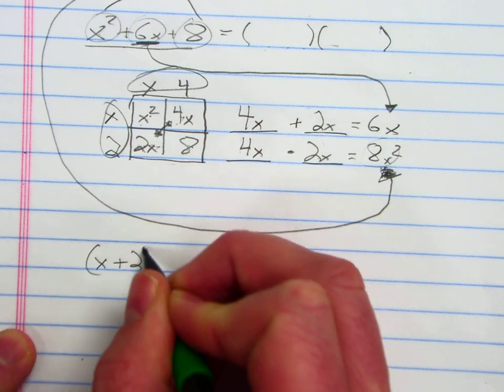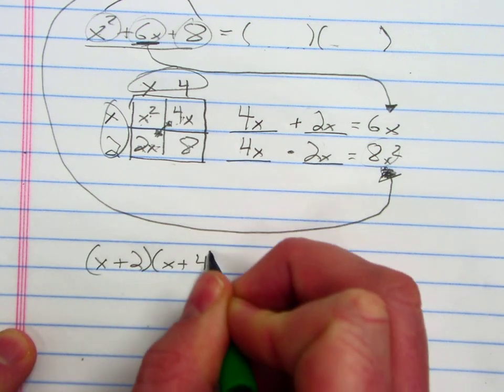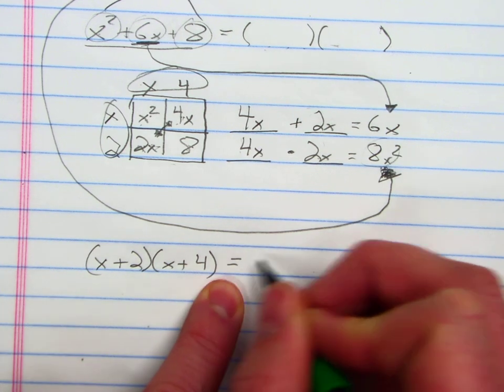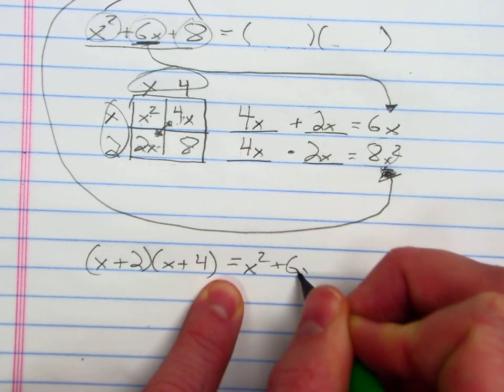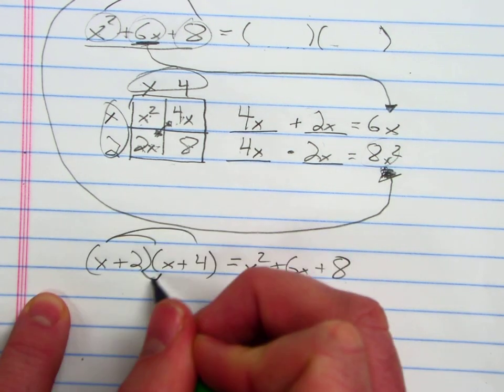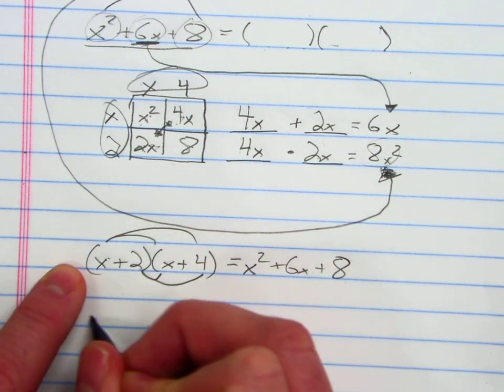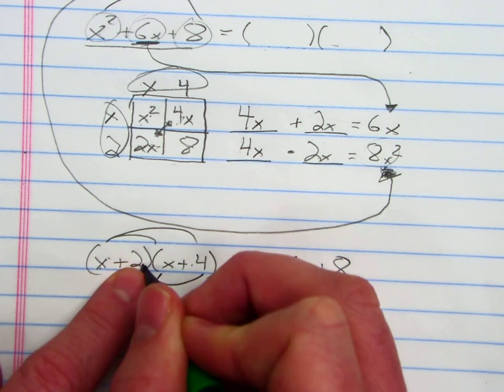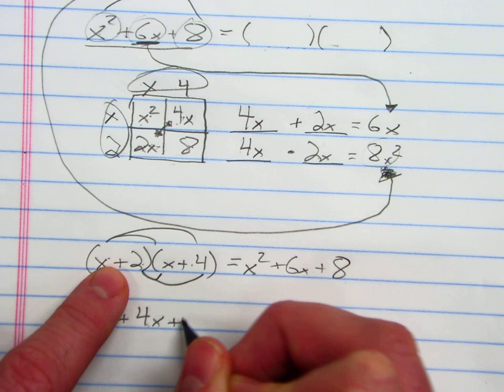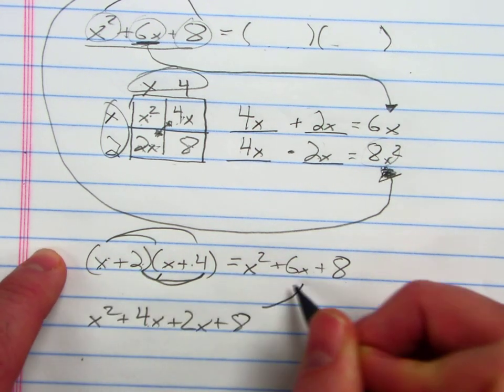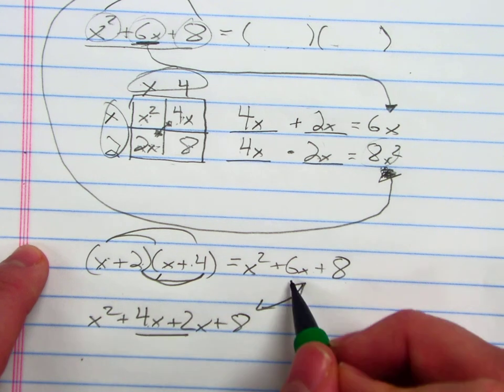And I want to make sure though that that's equal to x squared plus 6x plus 8. If I use my distribution strategy that we've learned, x times x is x squared, x times 4 is 4x, 2 times x is 2x, and then 2 times 4 is 8.